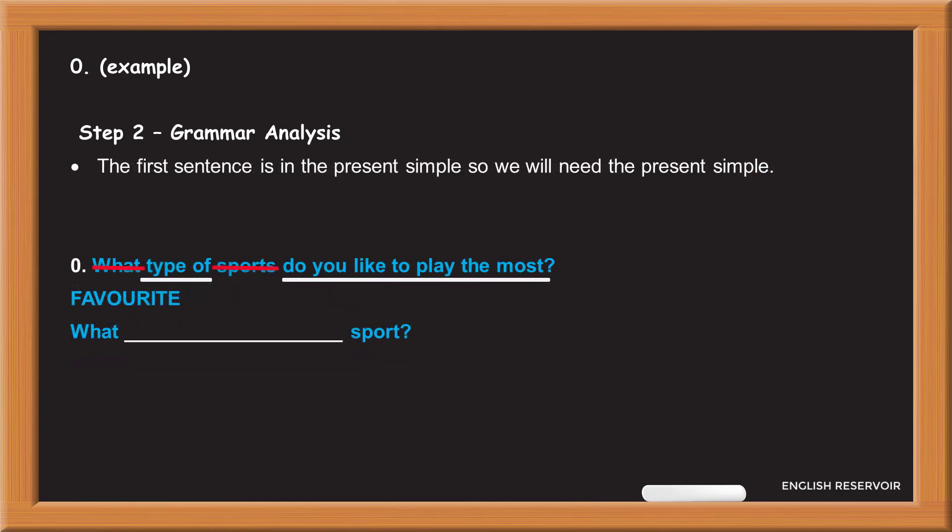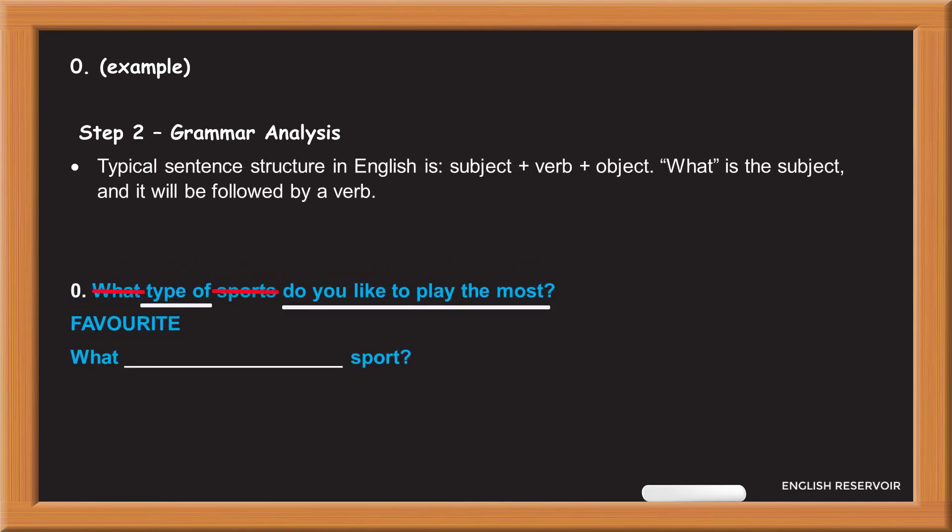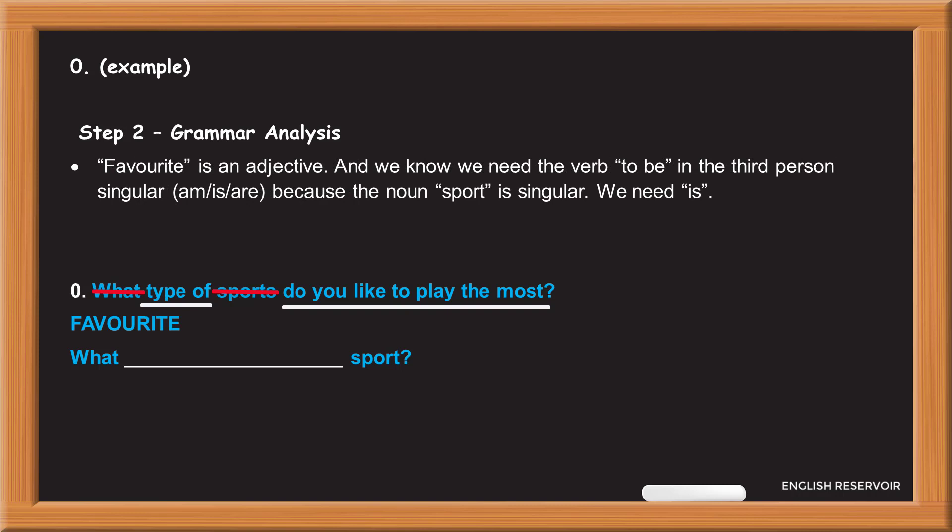The first sentence is in the present simple, so we will need the present simple. Typical sentence structure in English is subject plus verb plus object. What is the subject and it will be followed by a verb. Favorite is an adjective, and we know we need the verb to be in the third person singular. Am is are. Because the noun sport is singular, we need is.